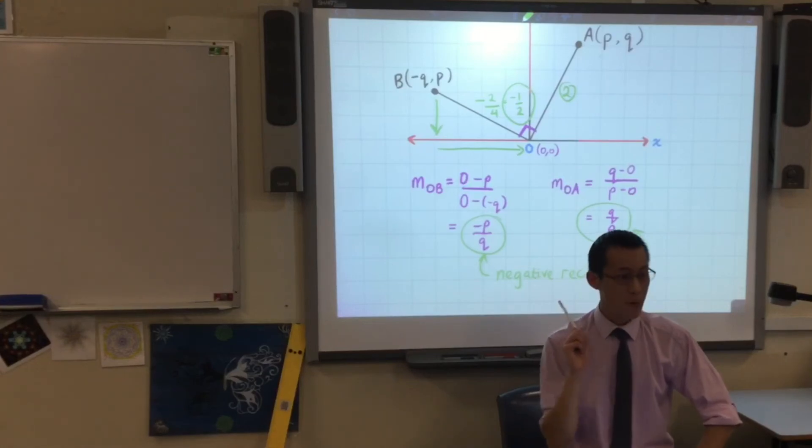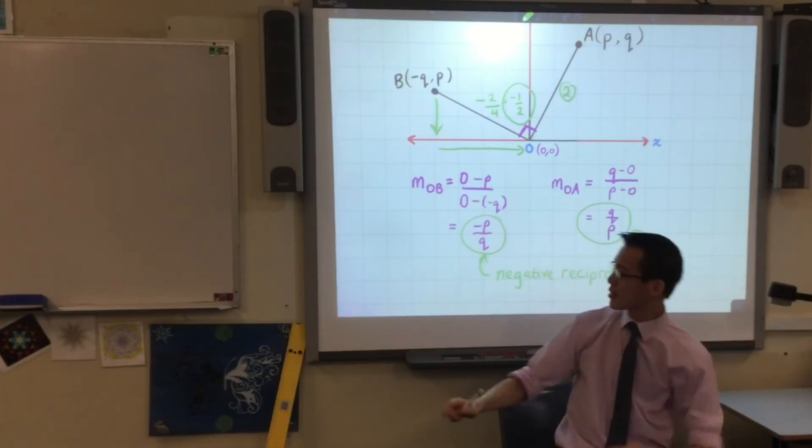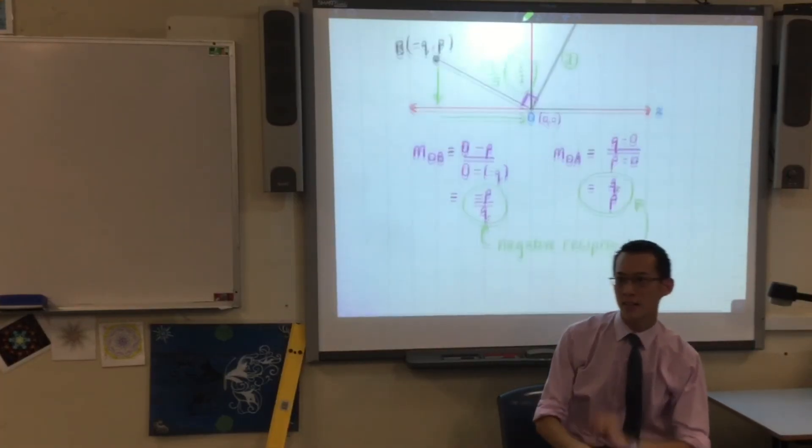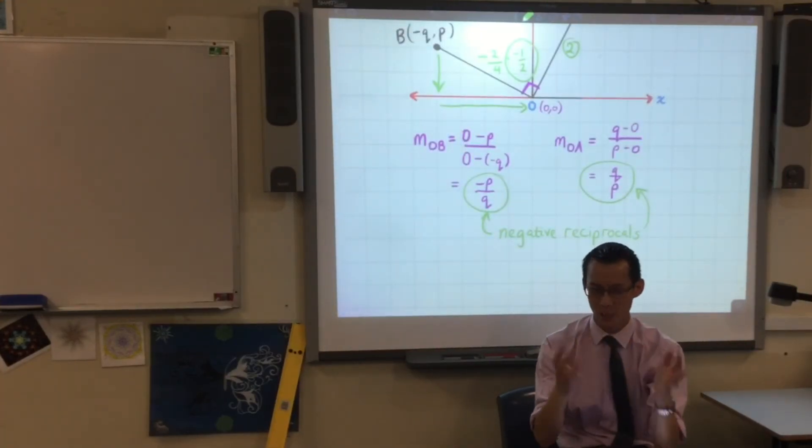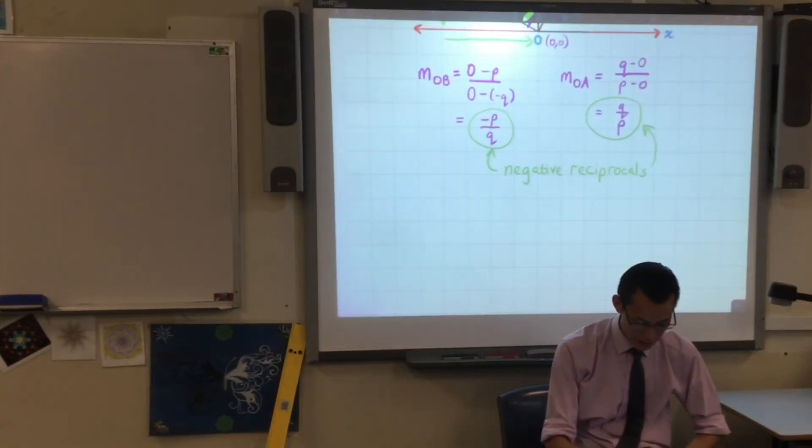So, let me recap. Parallel lines, equal gradients. Perpendicular lines, negative reciprocal gradients. There's one way that you might find it a little bit easier to say. Because negative reciprocal, a bit of a mouthful. I'm going to say it down the bottom here. And I'd love you to have it underneath.